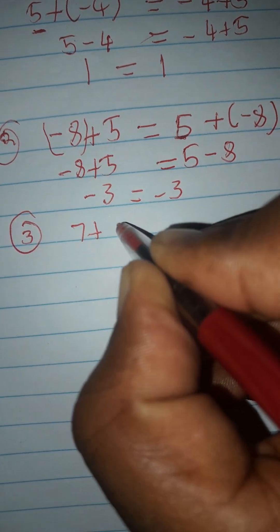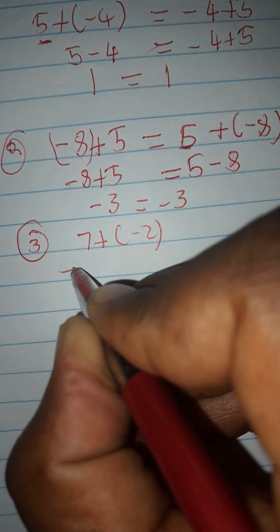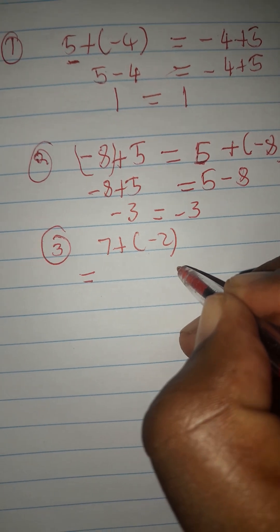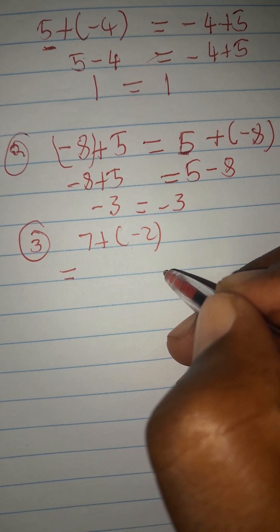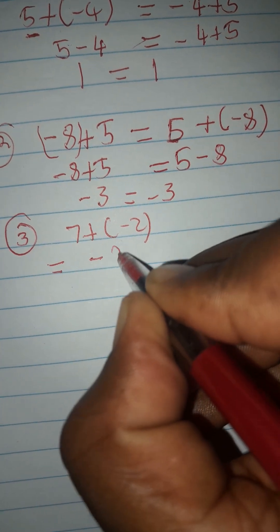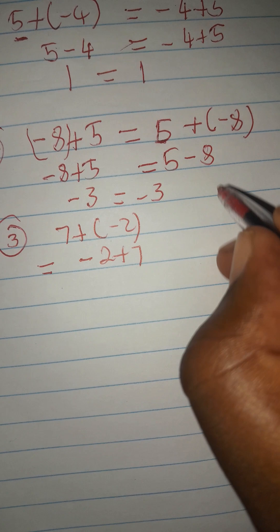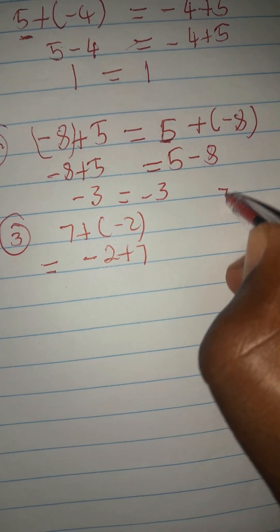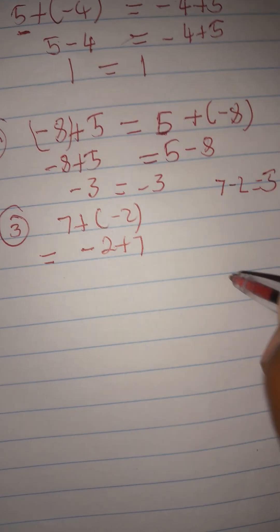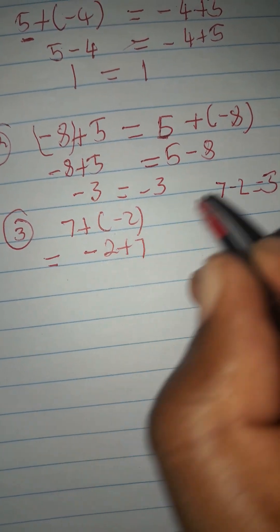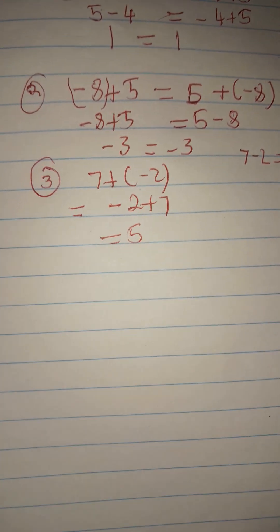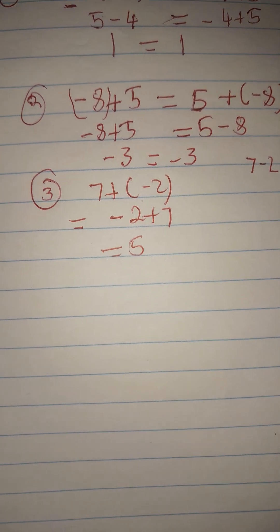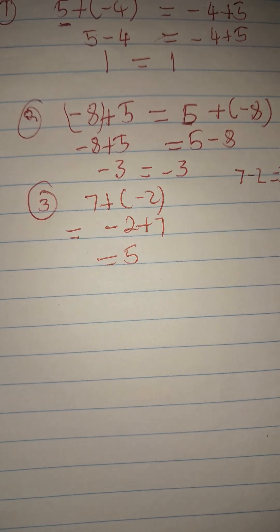For number three, we are given seven plus negative two. The same approach applies — using commutative property, swap the numbers: negative two plus seven. A positive and a negative gives seven minus two, which is five. And negative two plus seven is the same as seven minus two, which is five. So our solution is five.